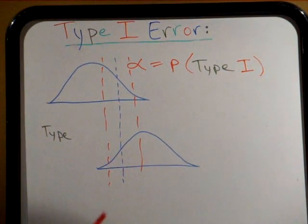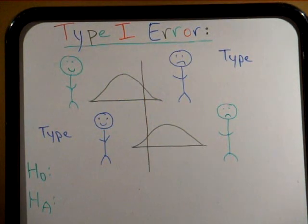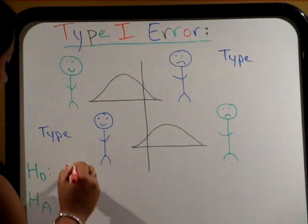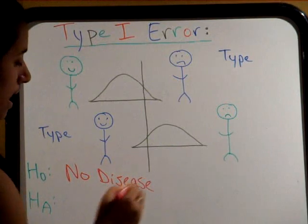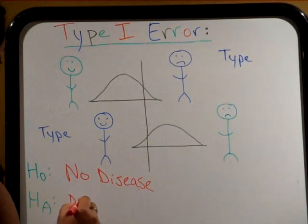We will look at the second model later when we discuss type 2 errors. How about we apply what we have learned to another scenario. Testing for a disease is a good example. The null hypothesis is that a person is disease free, and the alternate is that they are infected or that they have the disease.